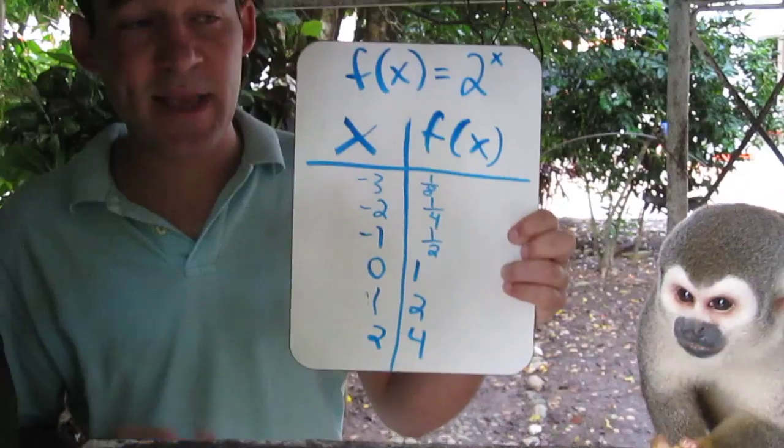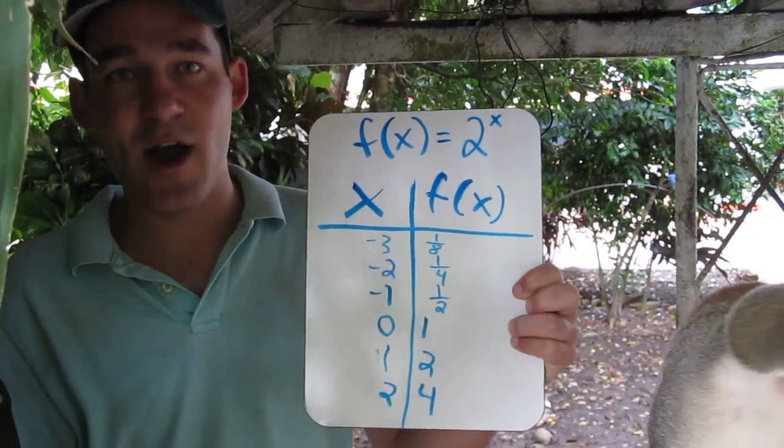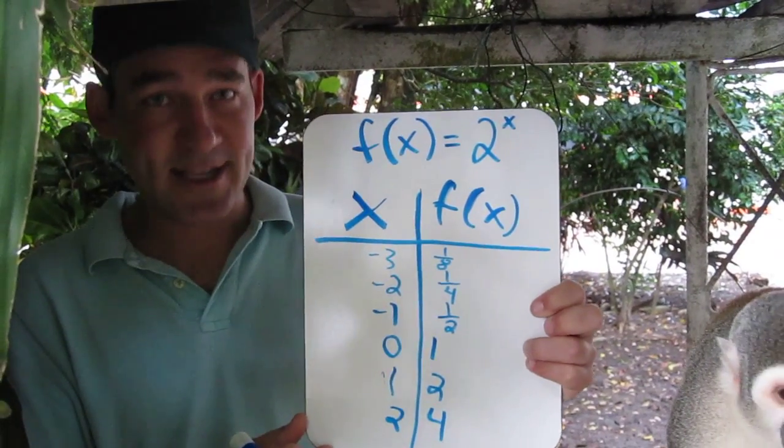Now we could go on, but our next step is going to be to graph these using these as x values and these as y values. This is called an exponential function.